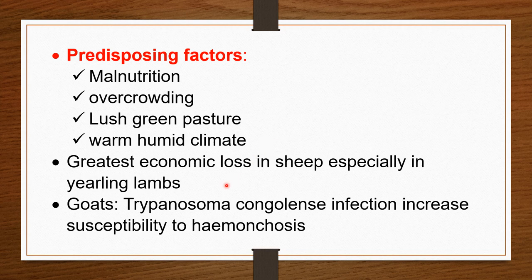Haemonchosis is of great economic importance and causes the greatest economic losses in sheep. It is the main parasitic disease of sheep causing gastroenteritis, especially in yearling lambs. Scientists have observed that in goats, Trypanosoma congolense infection increases susceptibility to haemonchosis. Any concurrent disease that decreases the vitality of the animal may also invite haemonchosis.